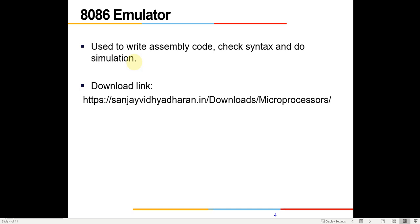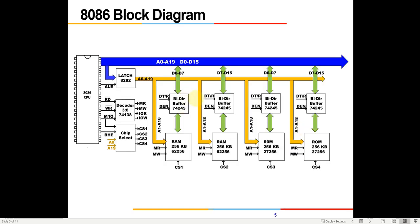The emulator software enables us to write the assembly code, do syntax checking, and visualize how data is being stored in RAM and at which location. This is the best we can do in online mode since we don't have access to the actual hardware. You can download the 8086 simulator either from the net or from my webpage. You will find a zip file for the 8086 emulator — it's a very small file. It will ask for a registration key; you can skip that for the time being and it will work fine.